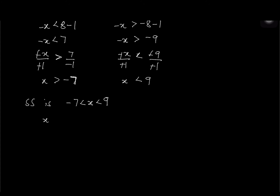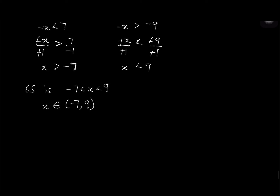In interval notation for question 22: x belonging to (negative 7, 9) using parentheses because they are strict inequalities. On the number line, place negative 7 and 9 with open parentheses and connect them.